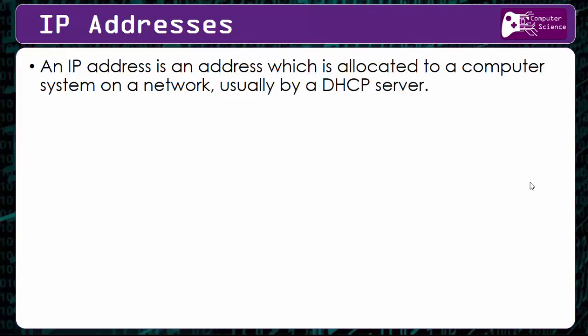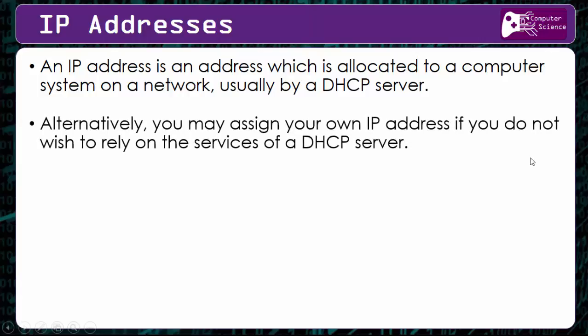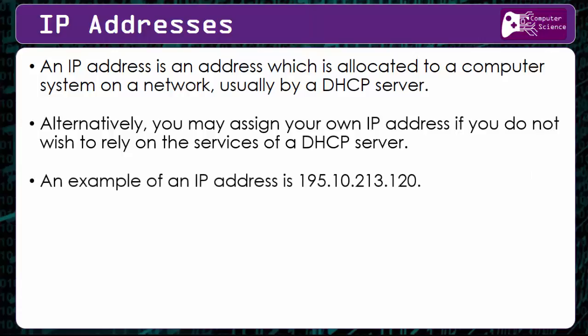An IP address — there's another video which discusses IP addresses as well — but an IP address is allocated to a computer usually by a DHCP server. However, you can choose to manually assign your own IP addresses to the devices on your network, rather than allow it to be automatically assigned. This is an example of an IP address.